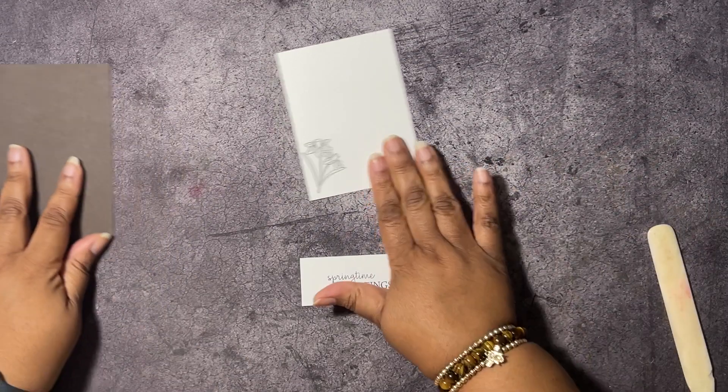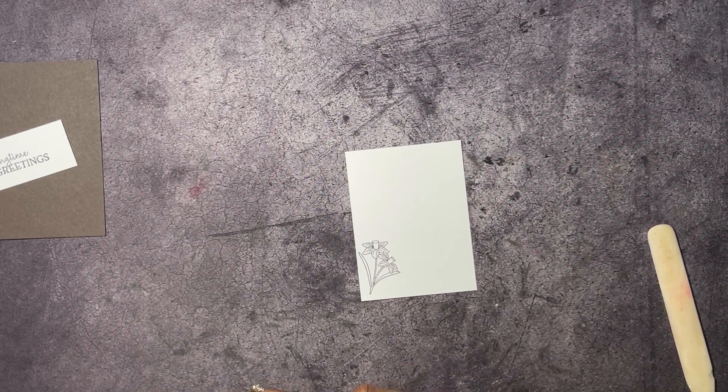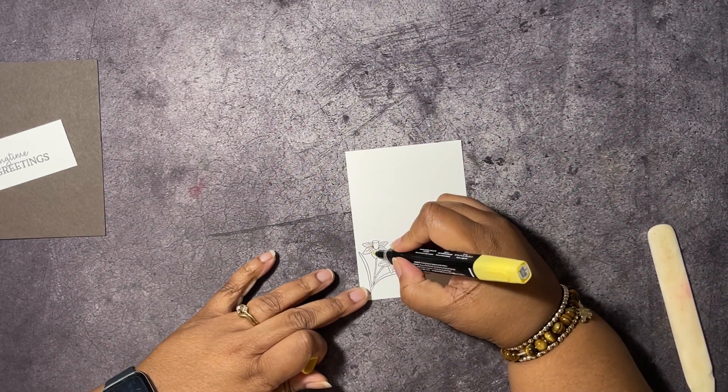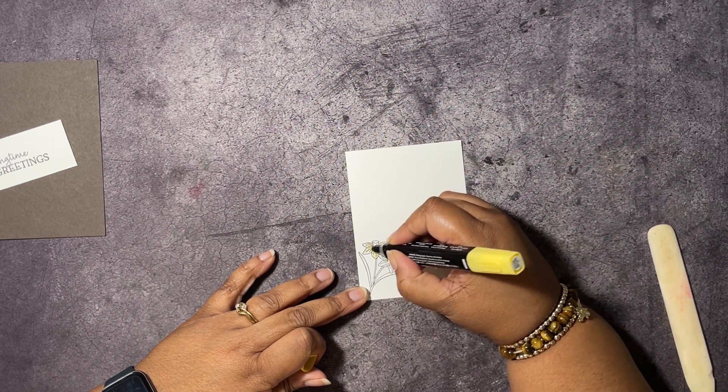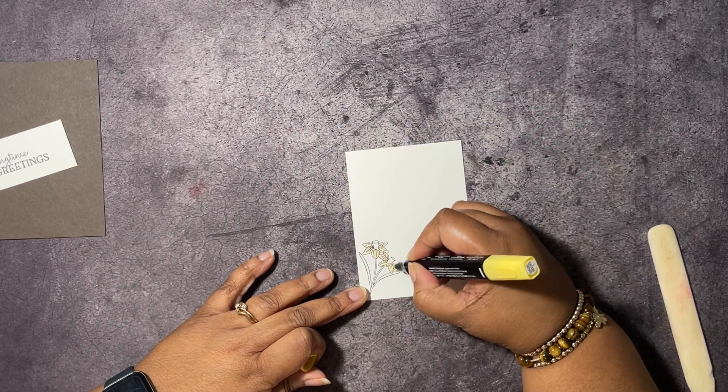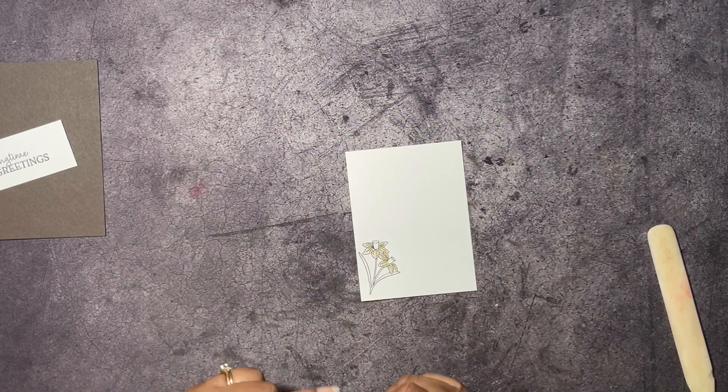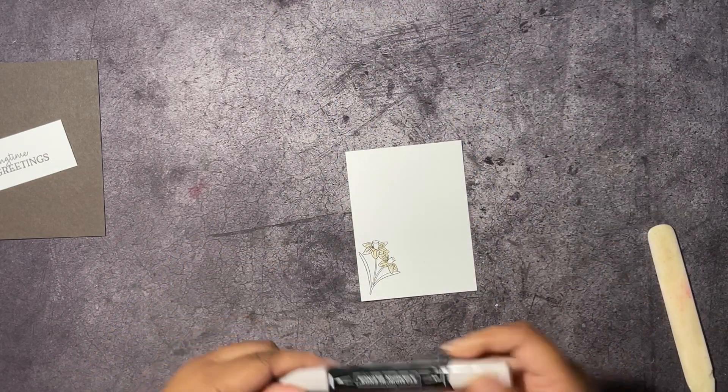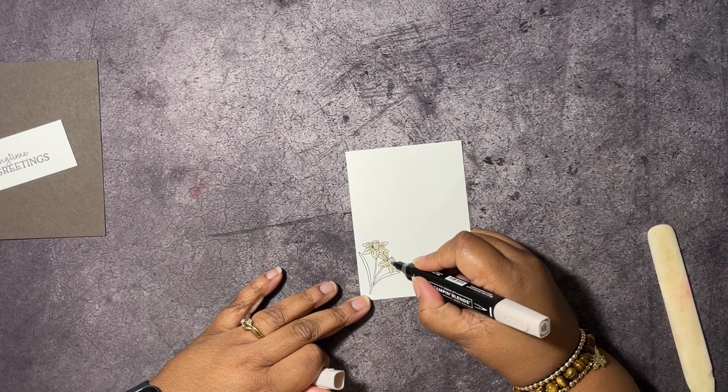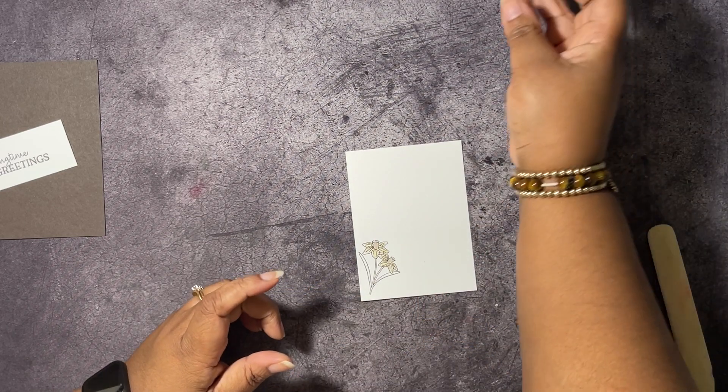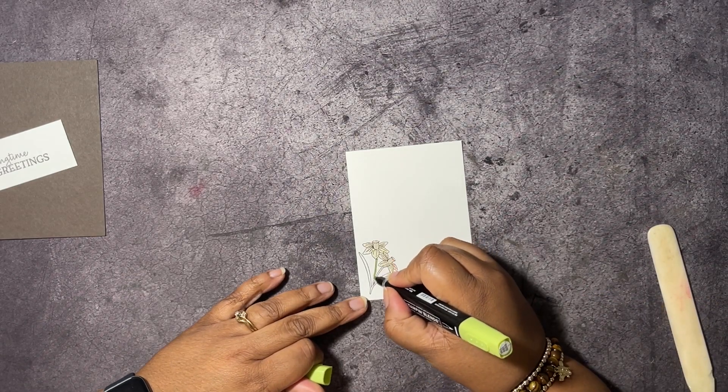Let's go ahead and color these flowers. I have the light Daffodil Delight. We're gonna do some rough coloring here. Then we're going to get light Crumb Cake, color in these centers. Then we're going to get light Granny Apple Green, color the stems and the leaves.